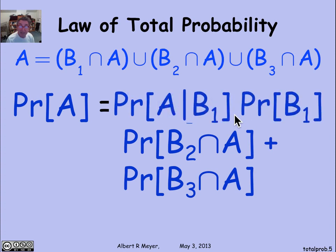So let's replace it by the probability of A given B1 times the probability of B1. That's another formula for B1 intersection A.